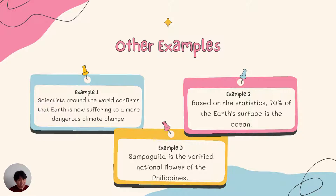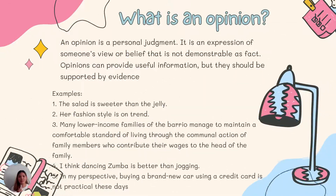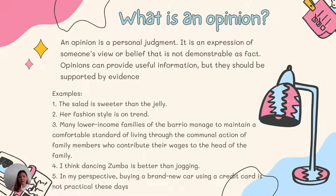Now that we all know what a fact is, here's Ma'am Georgie to explain an opinion. An opinion is a personal judgment. It is an expression of someone's view or belief that is not demonstrable as a fact. The cue here is 'view or belief.' Opinions can provide useful information, but they should be supported by evidence. Below are examples of opinion statements: 'The salad is sweeter than the jelly.' 'Her fashion style is on trend.' 'Many lower-income families of the barrio manage to maintain a comfortable standard of living through communal action.' 'I think dancing zumba is better than jogging.' And lastly, 'In my perspective, buying a brand new car using a credit card is not practical these days.'